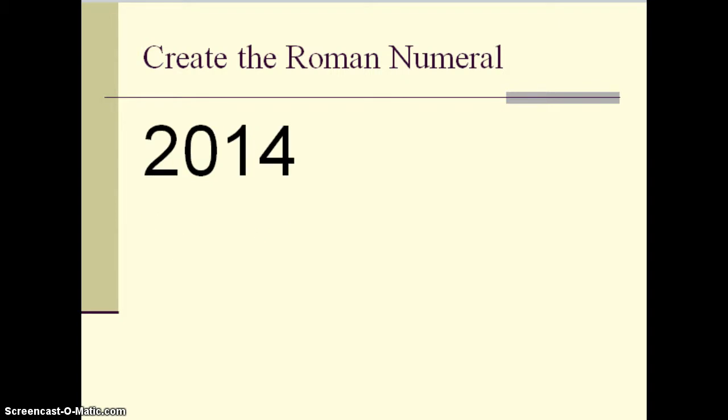Let's try another place value, the year, 2014. So we're going to start with the 2000. 1000 is M, think millennium, so 1000, 2000. In our hundredths place, we have a 0. The Roman numerals don't have a placeholder, so we totally skip over that, and we're already at the tens place. So we need 10, which is just X. Then we go to the ones place, and we need 4. We've done 4 before, so 1 less than 5. And we've written the year, 2014.